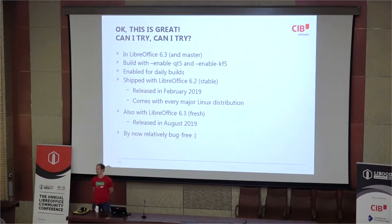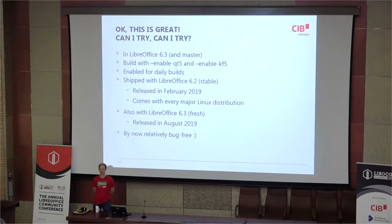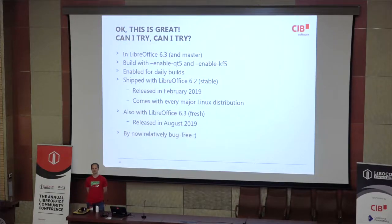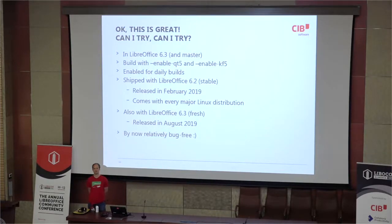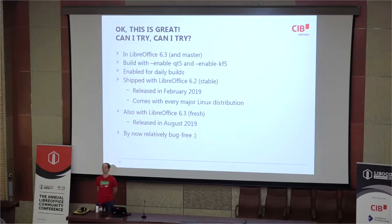That gets me to the end. The status right now: it's in 6.2, most fixes and changes are also backported to 6.2 but not everything, so the full glory is in 6.3. If you're building it yourself, do that with enable-Qt and enable-KF5 — we renamed it because somebody told us KDE is not the right name, it's KF5, and we should be embarrassed not to have named it properly in the first place. It's enabled for daily builds, so if you get Linux dailies the plugin should be there. It's now on the level of GTK3 — at least counting open bugs — and you can now actually productively work with it, and people do.